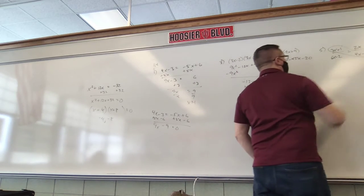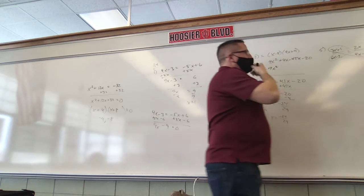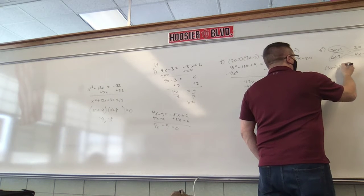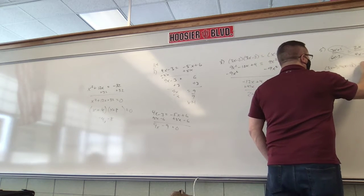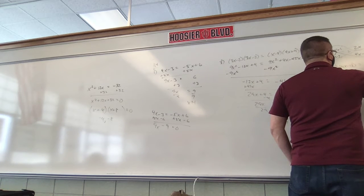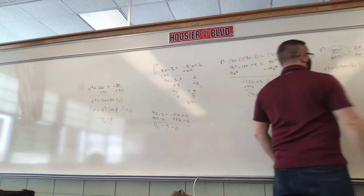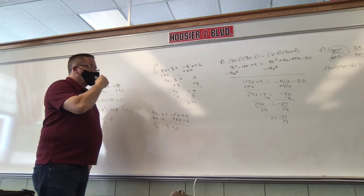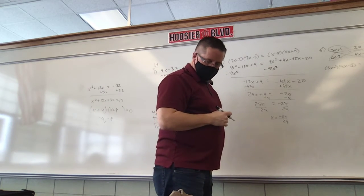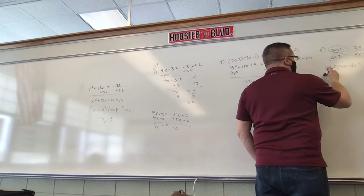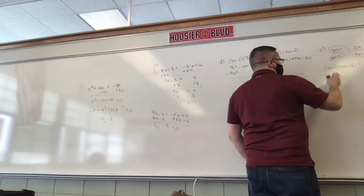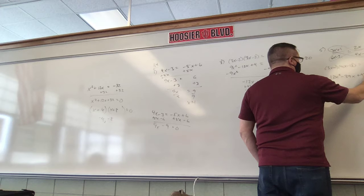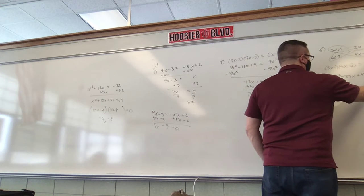So this times this has to equal that times that. Let's write that out: 3x plus 1 times 4x minus 13 has to equal 6x minus 2 times 2x plus 5. Then it's like the problem we just did. We foil. We have 12x squared. Outers: 3 times negative 13 is negative 39x. Inners: 1 times 4x is 4x. Last: 1 times negative 13 is negative 13.